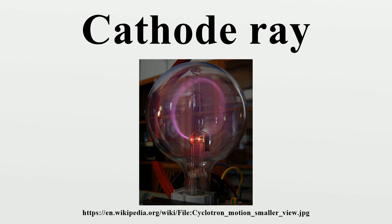The debate was resolved in 1897 when J.J. Thomson measured the mass of cathode rays, showing they were made of particles but around 1800 times lighter than the lightest atom, hydrogen. Therefore they were not atoms, but a new particle — the first subatomic particle to be discovered — which he originally called corpuscle, but was later named electron, after particles postulated by George Johnston Stoney in 1874. He also showed they were identical with particles given off by photoelectric and radioactive materials, and it was recognized they carry electric currents in metal wires and carry the negative electric charge of the atom. Thomson was awarded the 1906 Nobel Prize in Physics for this work.